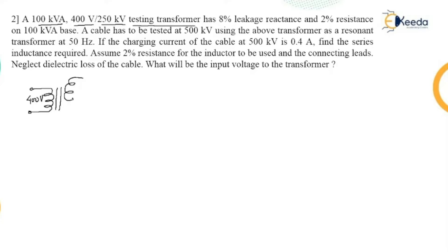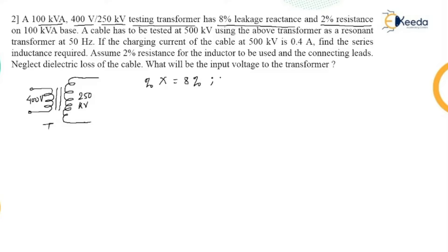A high voltage of 250 kilovolt is available on the secondary side of the transformer. This transformer has 8% leakage reactance and 2% resistance. The percentage reactance of 8% is not given in ohms but in percentage, so it must be converted into ohms. Similarly, the resistance of 2% also needs to be converted into ohms.